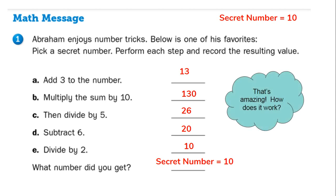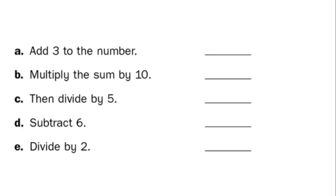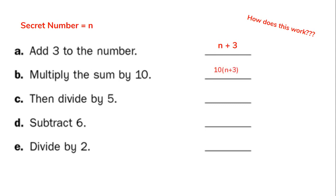Let's talk about how this works. We're going to use the secret number of n — n could be any number, that's why I'm using this variable. When I add three to my variable, I get n plus 3. Now I'm going to multiply that by 10, so I get 10 times the quantity (n + 3).